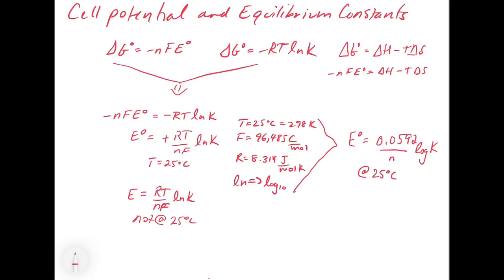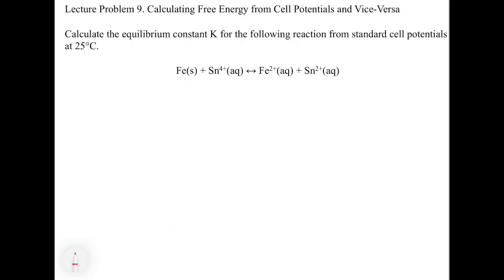So we're going to take a quick look at a practice question, which is lecture problem 9. In lecture problem 9, it asks you to calculate the equilibrium constant K for the following reaction from standard cell potentials at 25 degrees Celsius. So what we've got here is a reaction between iron and tin 4+ giving us iron 2+ and tin 2+.